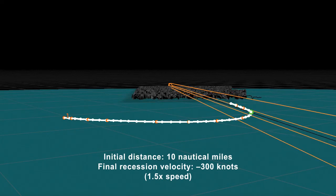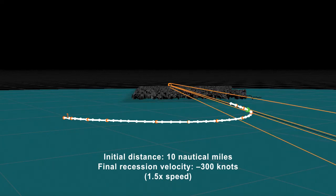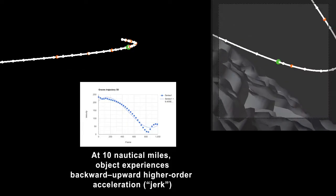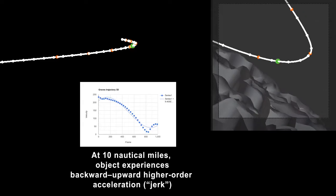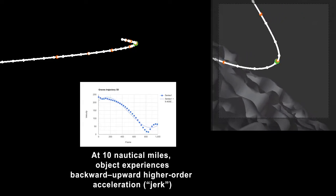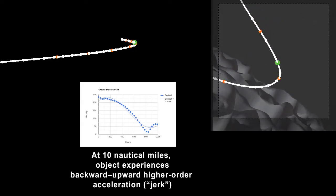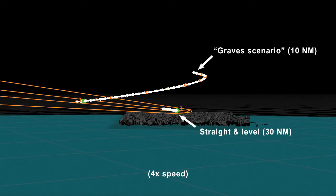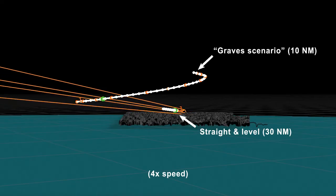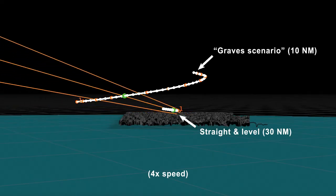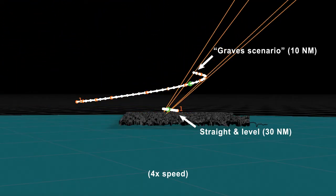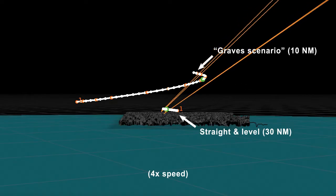It's possible that a physical object took this trajectory 300 miles off the coast, but the skeptic in me thinks it's more likely a system glitch. It seems unlikely that such a bizarre trajectory would flatten out to being straight and level farther away.